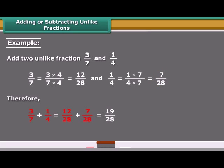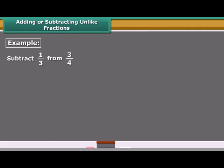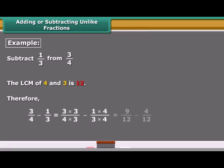Note that 28 is the least common multiple (LCM) of 7 and 4. In another example, to find the subtraction of unlike fractions, we find equivalent fractions of 3/4 and 1/3 with the same denominator given by the LCM of 4 and 3, which is 12. Therefore, the subtraction of 3/4 and 1/3 is 5/12.